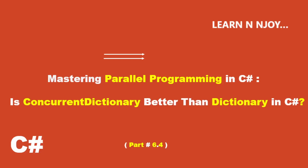Hello friends, welcome back to our channel. Today in part 6.4 of the Mastering Parallel Programming series in C#, we are diving into a critical performance comparison between ConcurrentDictionary and Dictionary in C#, specifically exploring which one performs better in a multi-threaded environment.